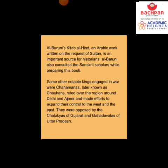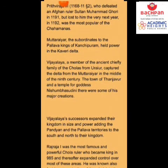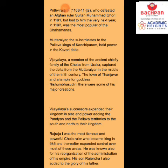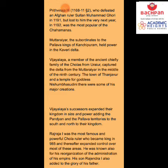They were opposed by the Chalukyas of Gujarat. Prithviraj III, the most powerful ruler of the Chohans, defeated the Afghan ruler Sultan Muhammad Gori in 1191, but lost to him the very next year in 1192.